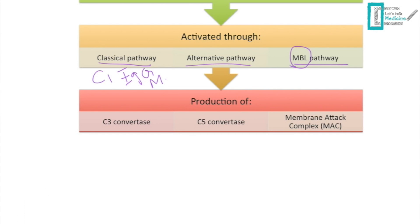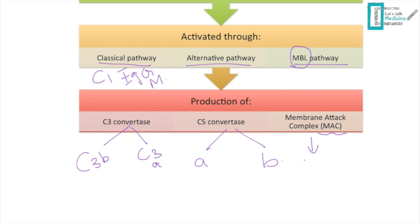Activation produces C3 convertase, C5 convertase, and the membrane attack complex (MAC). C3 convertase yields C3a and C3b; C5 convertase yields C5a and C5b. The MAC is composed of C6 through C9.